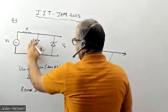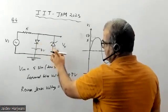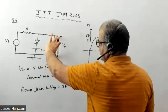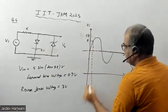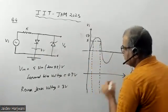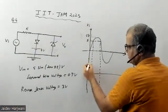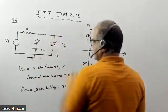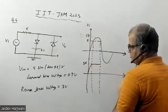During the positive half-cycle, as we increase the input up to 3 volts, both diodes remain open and the output follows the input. Once the input voltage reaches 3 volts, the Zener diode starts conducting and the output voltage becomes fixed at 3 volts. For any input beyond 3 volts, the output voltage is clamped to 3 volts. As the input falls back toward zero, the output again follows the input.